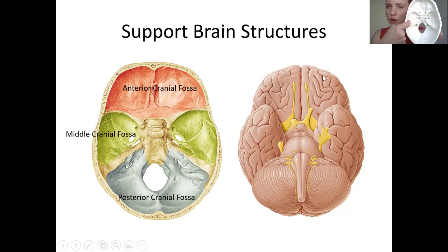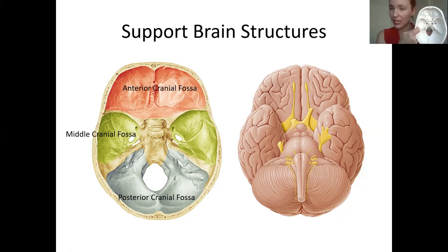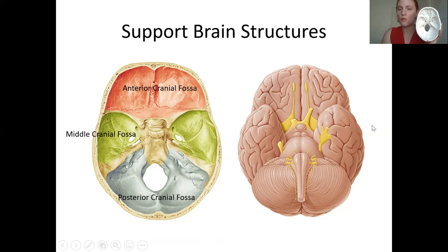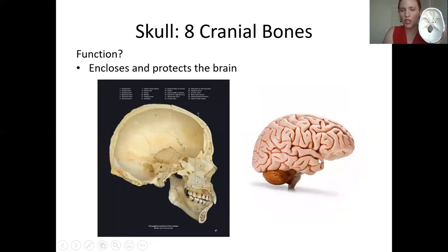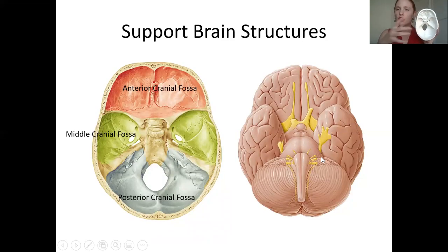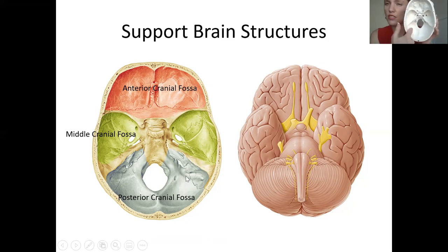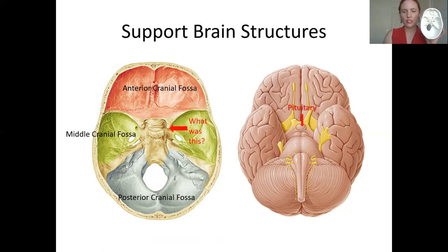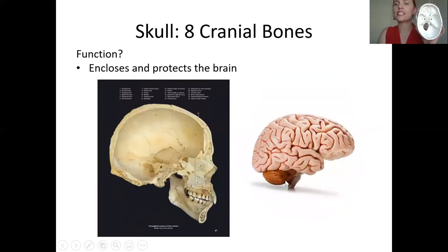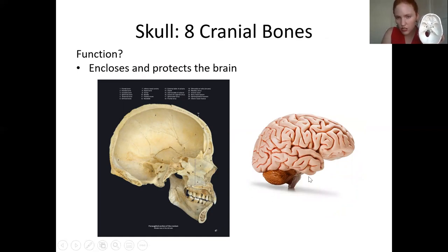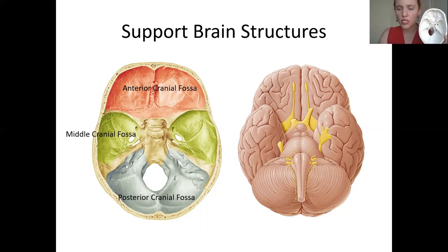In the middle is the middle cranial fossa — note I said middle, not medial. The middle cranial fossa supports the temporal lobe, which you can see sticking out to the side. In the back you have the posterior cranial fossa, a deep depression in the rear, and that's where you find the cerebellum. For now, focus on these depressions in the cranium as structures that support the brain.